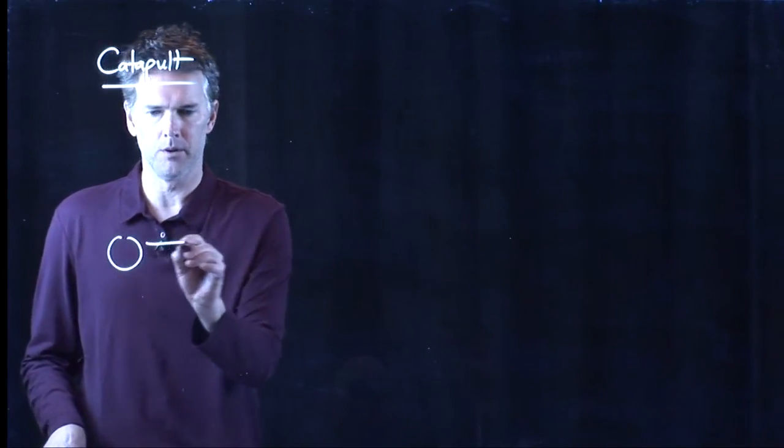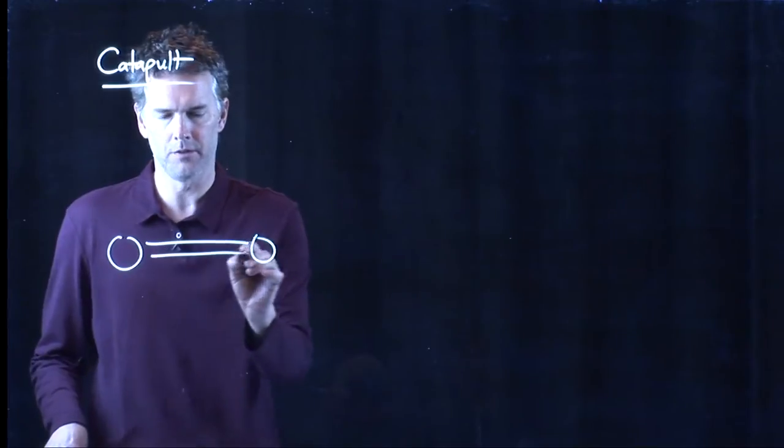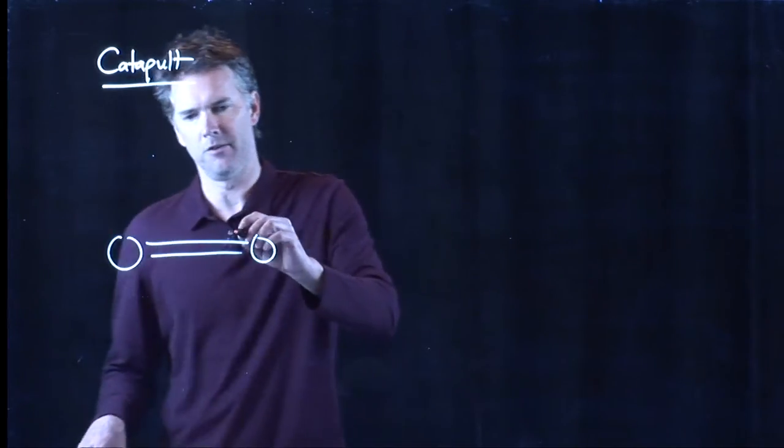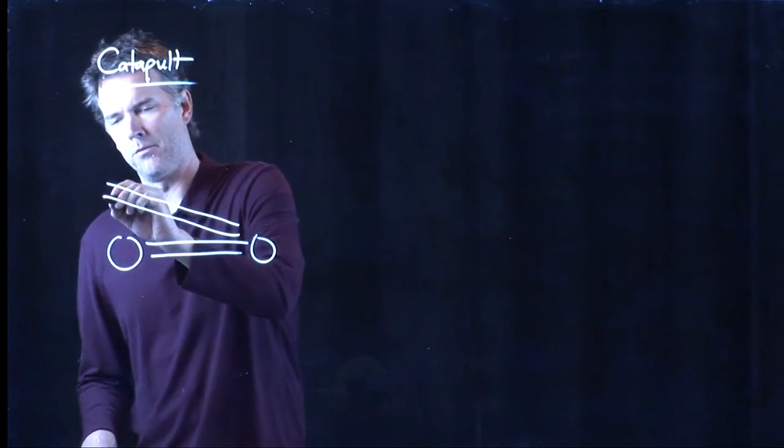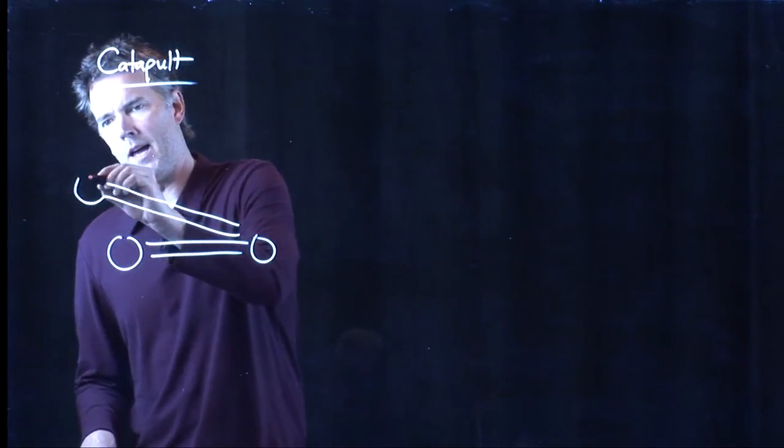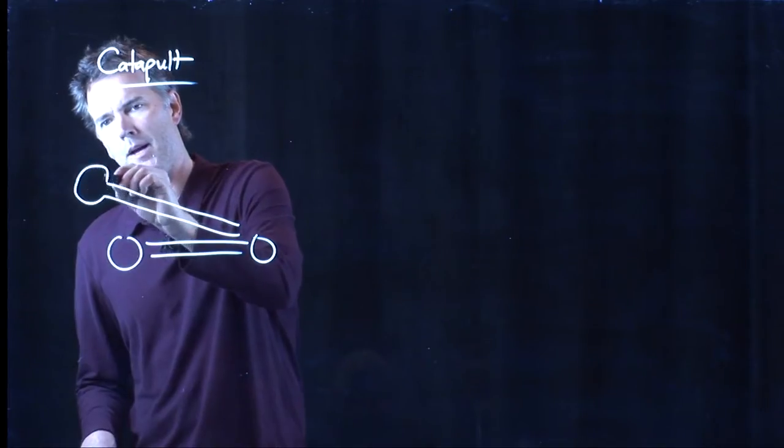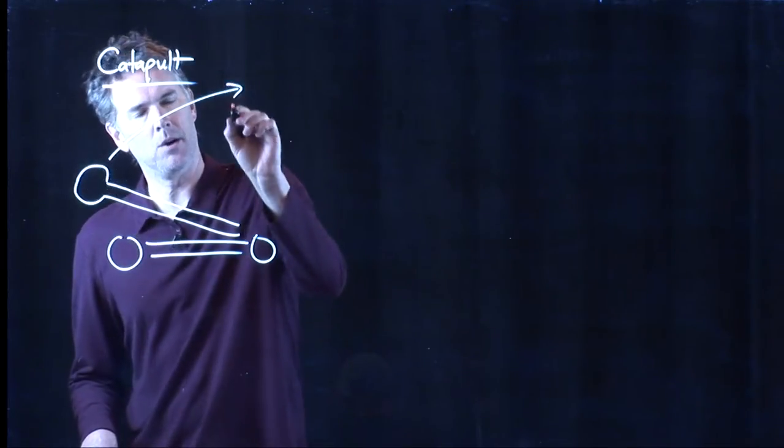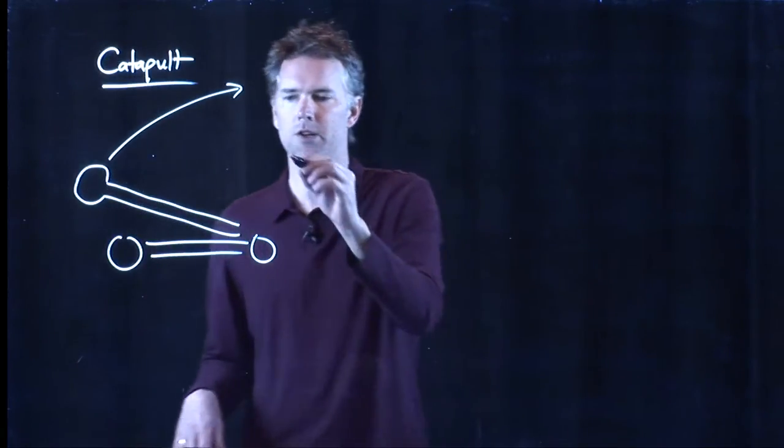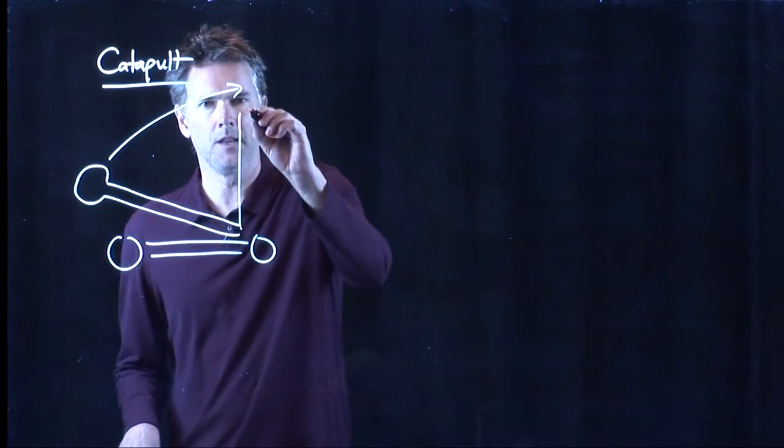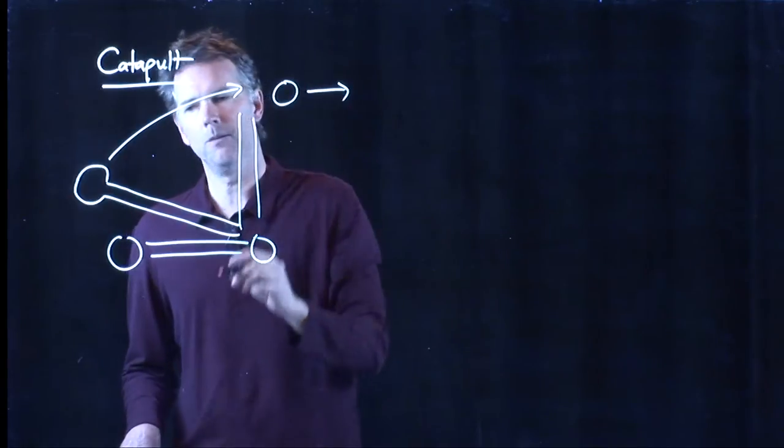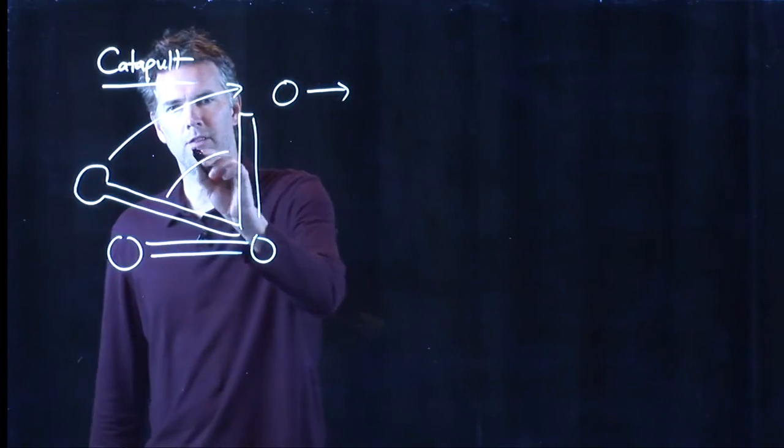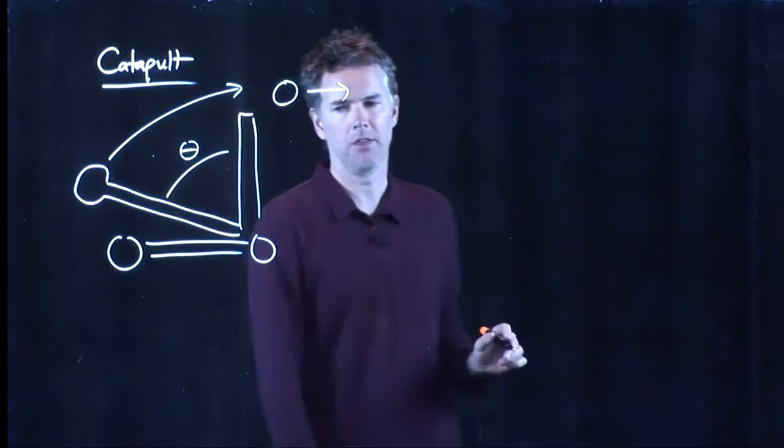Alright, so what does a catapult look like? Well, usually they put it on wheels so they can drive it around to various places. There's a big arm here that has some sort of bucket on the end. And in that bucket they put a big item, like a cannonball, which they are going to launch by rotating this catapult through a various angle. And let's define that angle as theta.